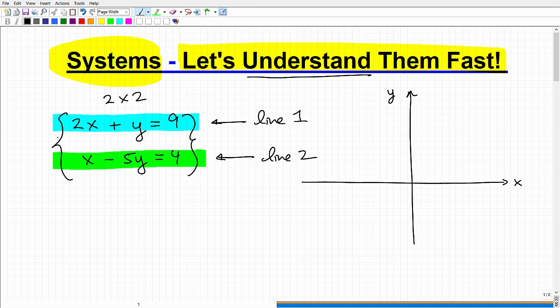So I want you to understand this concept of two lines that make up a system. So let's use some colors here. Let's use red. So let's say this is line one. And let's use another color, like blue.